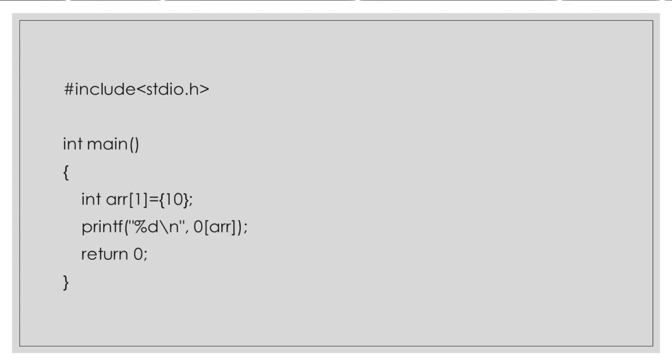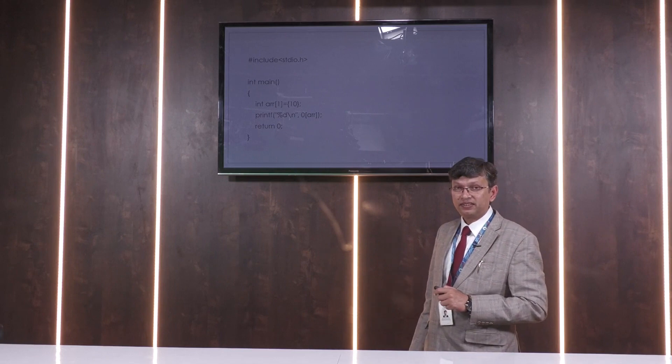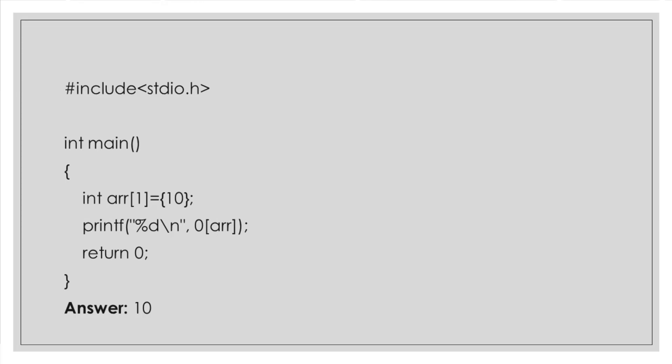Next question. Integer main, here we find that integer array 1, array 1 is equal to 10. Now we want to print using 0 and under square bracket I have written ARR. So what will it print? Yes, we have already discussed. The answer is 10 because we can use this form of printing as well.